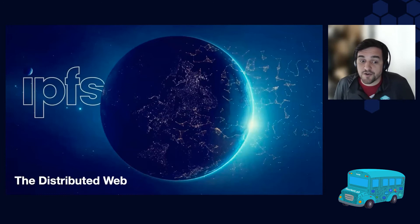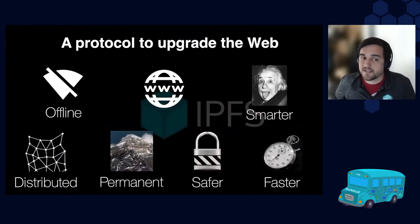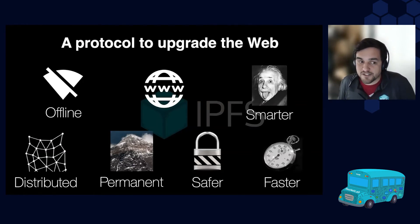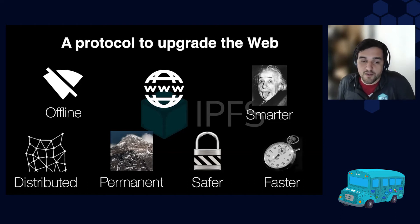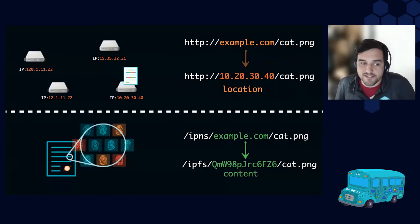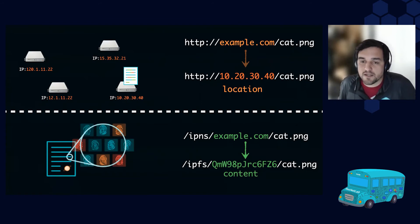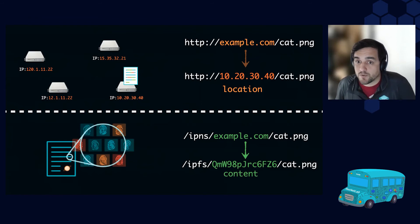IPFS is sometimes also known as the distributed web, and it is a protocol to upgrade the web. This is very important — it's not a protocol to create an alternative web. It's a protocol designed to future-proof the web and make it more resilient for many generations to come. It makes the web work offline, work in a distributed fashion, ensures that links are permanent and not ephemeral, and makes it safer, faster, and smarter. How it does this is by changing location addressing to content addressing — rather than pointing to a location where the content lives, we actually point to its cryptographic fingerprint, also known as the content hash or content identifier (CID). This CID gives us the ability to generate a proof that the bits I received are indeed the ones I was looking for.